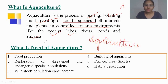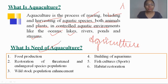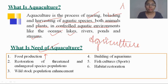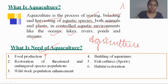We will study that in detail in the following slides. Now let's understand what is the need for aquaculture. The first need is that there is an increase in population, which raises high demand for food, particularly protein sources. People mainly feed on fish for the best intake of protein, so it is mainly used for food production.